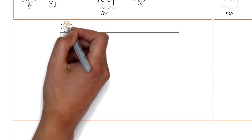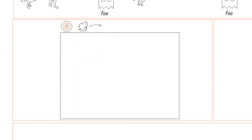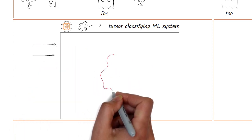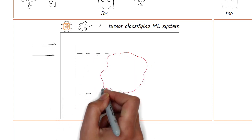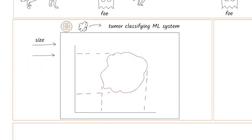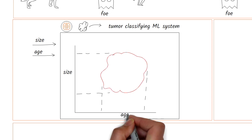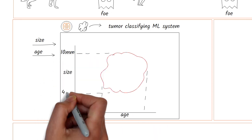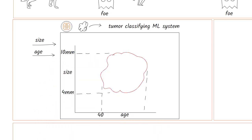An AI system makes a decision by evaluating certain attributes. Let's take the example of tumor classification and make it simple so we can understand the underlying basic concepts. Let's say the system looks at the size of the tumor and the age of the patient. If the size is approximately between 4 millimeters and 10 millimeters, and the age is approximately between 40 and 60 years old, then the system classifies the tumor as malignant — otherwise it's benign.